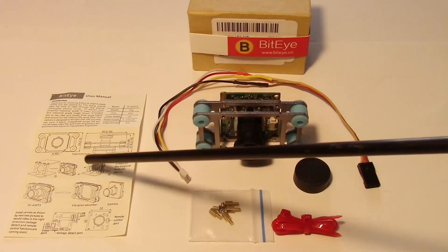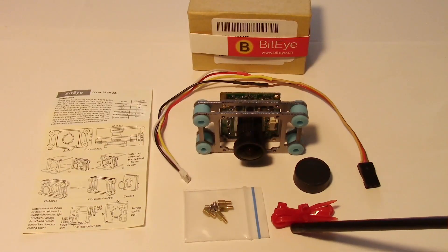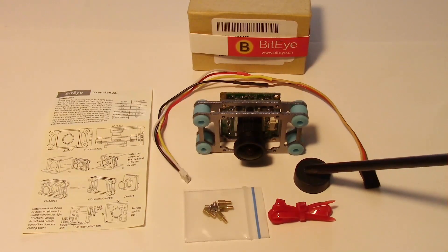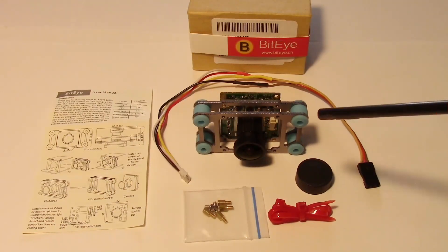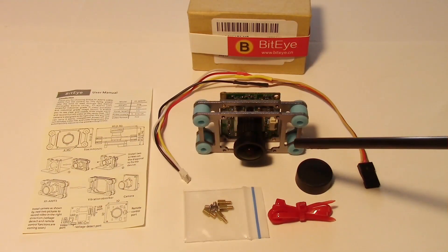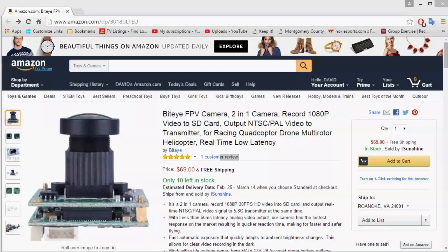Basically the instruction sheet, you get some extra standoffs, some tie wraps here. It comes with a lens cover and there is a cable to hook up to your FPV transmitter. It has a vibration mount right here that can be removed if you don't want it and you can get it on Amazon. I'll put a link under the video.